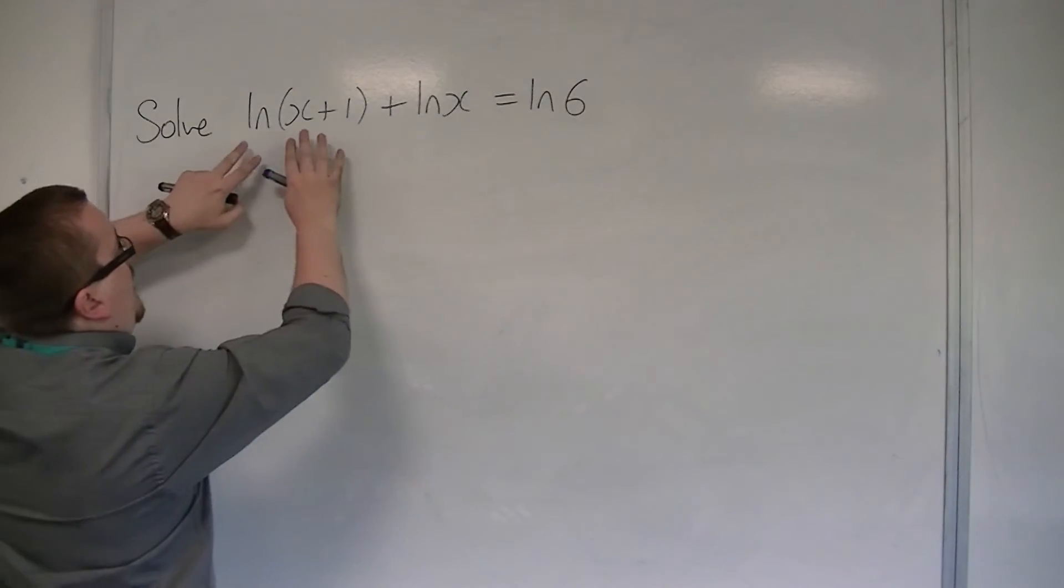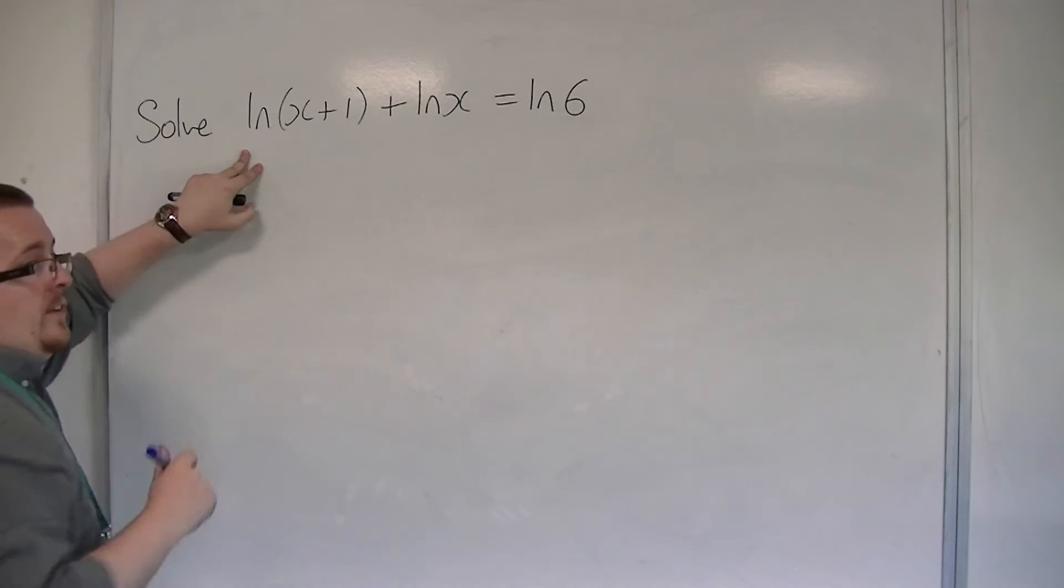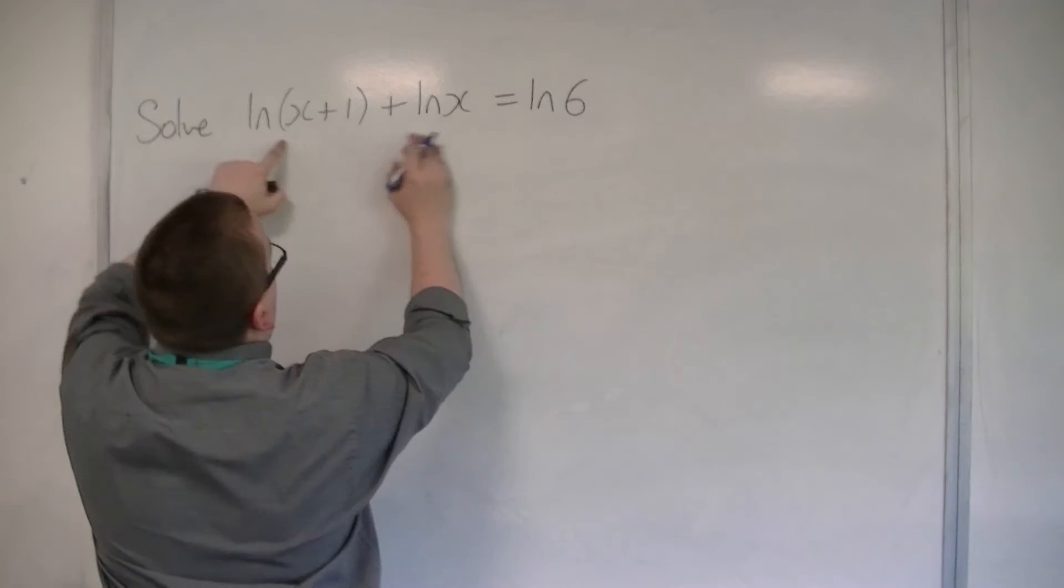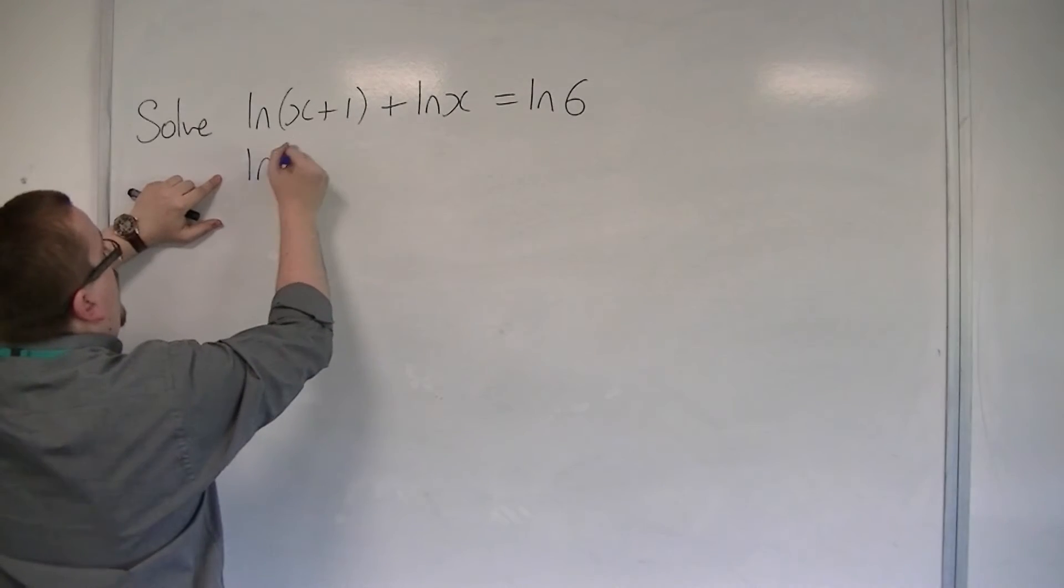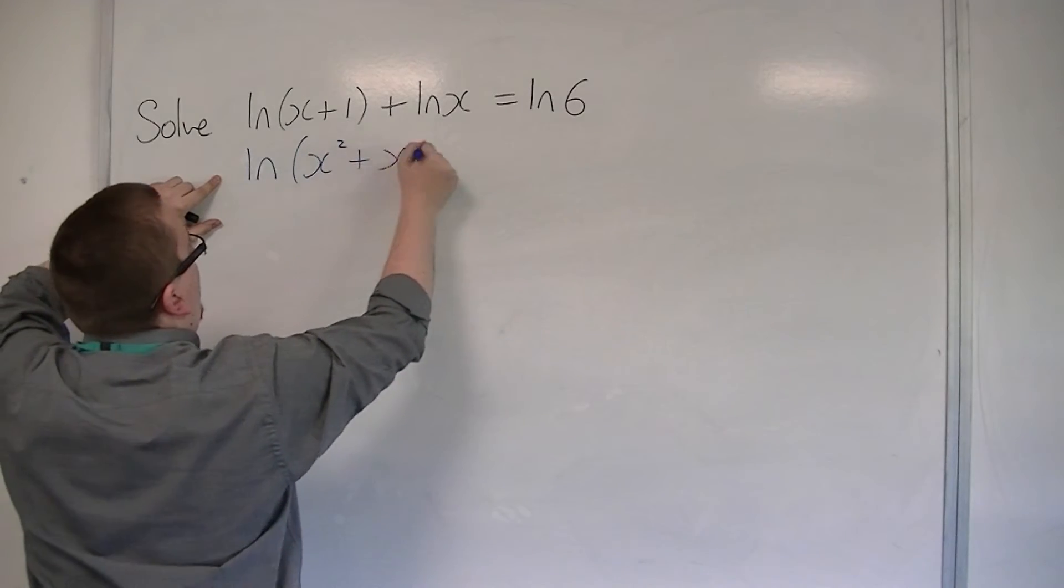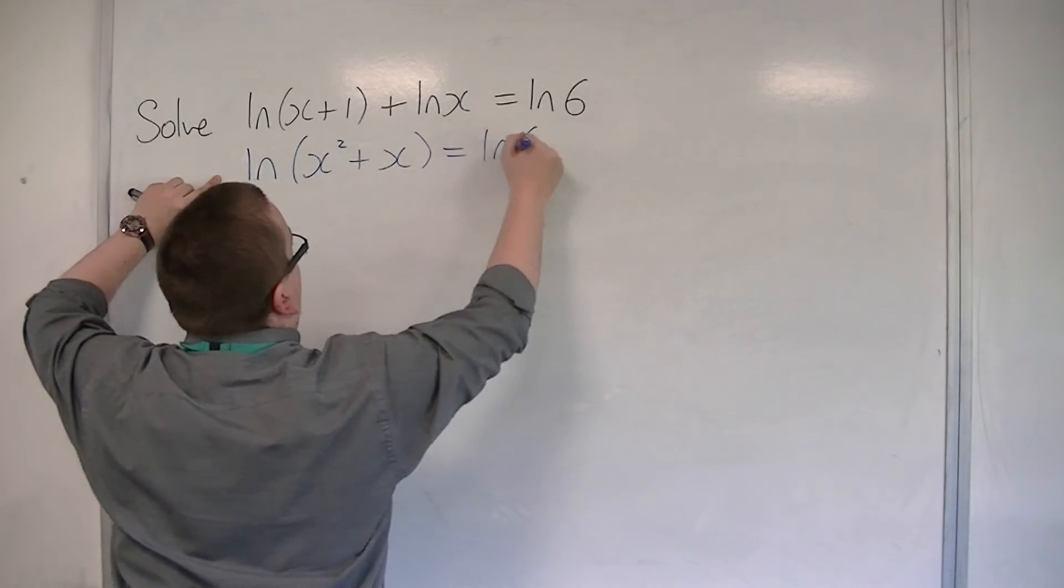First of all, the log x plus 1 and the log x can be combined using the first log law. The two get multiplied together, so we have log of x plus 1 times x, so x squared plus x is going to be equal to log of 6.